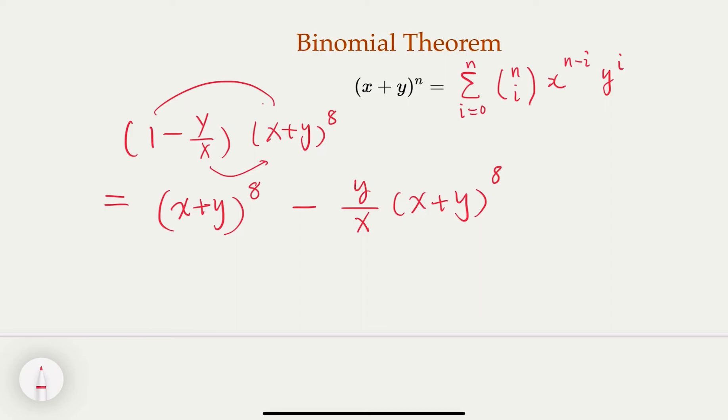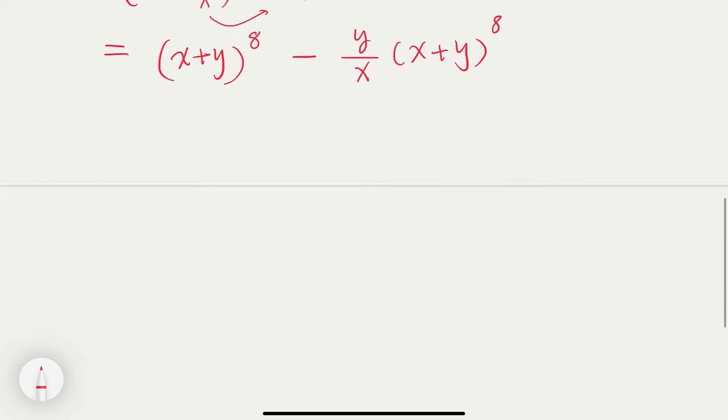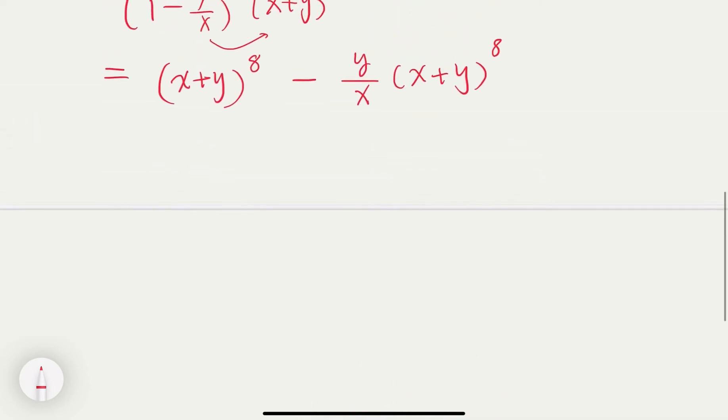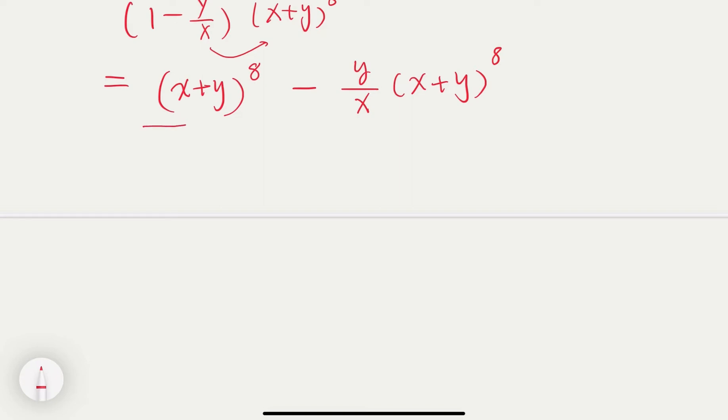So here, we're interested in the polynomial with coefficient of this term, x squared y to the 6. So over here, you have two terms. Each term would have a term, when you expand it out, x squared y to the 6th power. So in the first case, the coefficient would equal to, let me write it here, n choose 2.